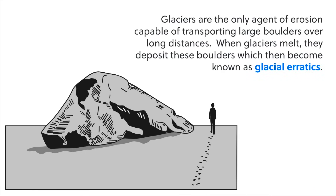Glaciers are the only agent of erosion that are really capable of moving large, large boulders. These are called glacial erratics. So when we see randomly scattered boulders throughout the landscape, we can infer that they were moved there by a glacier.